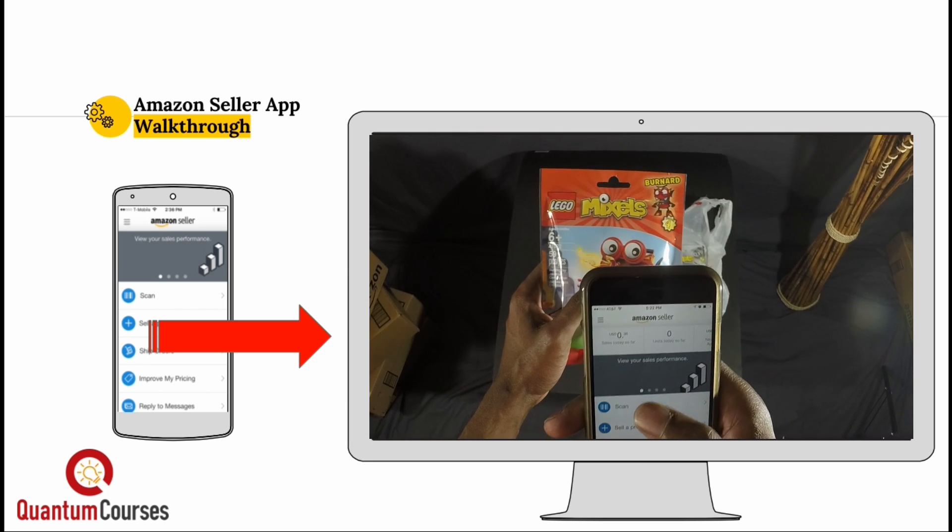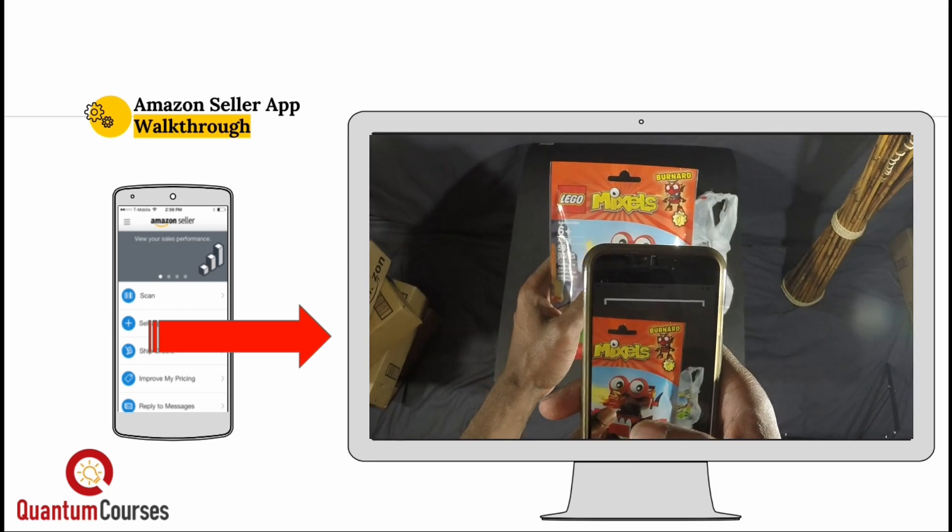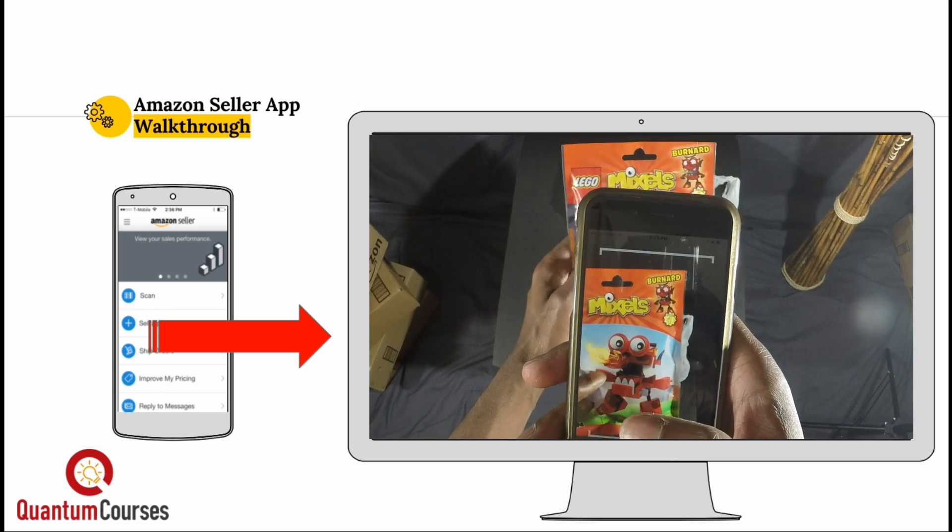Click on the scan button to pull up the scanner. Line up the barcode inside the guidelines on the screen.